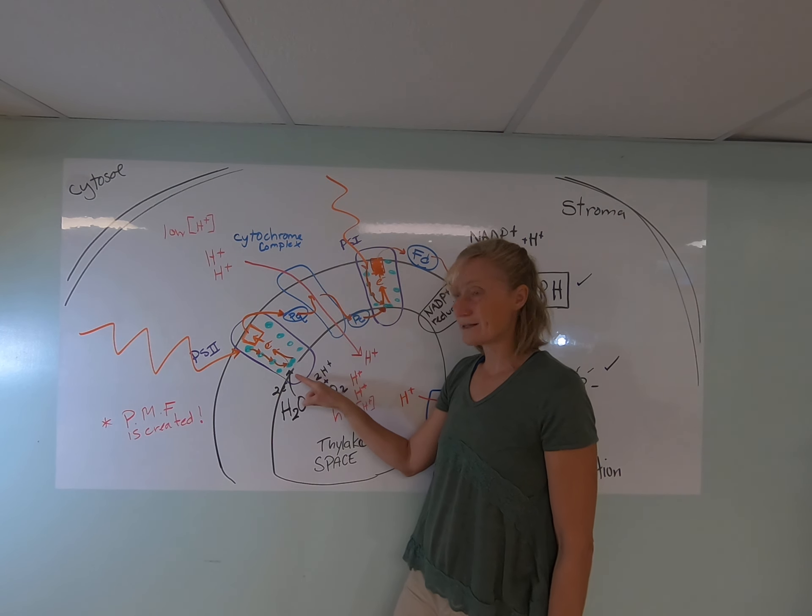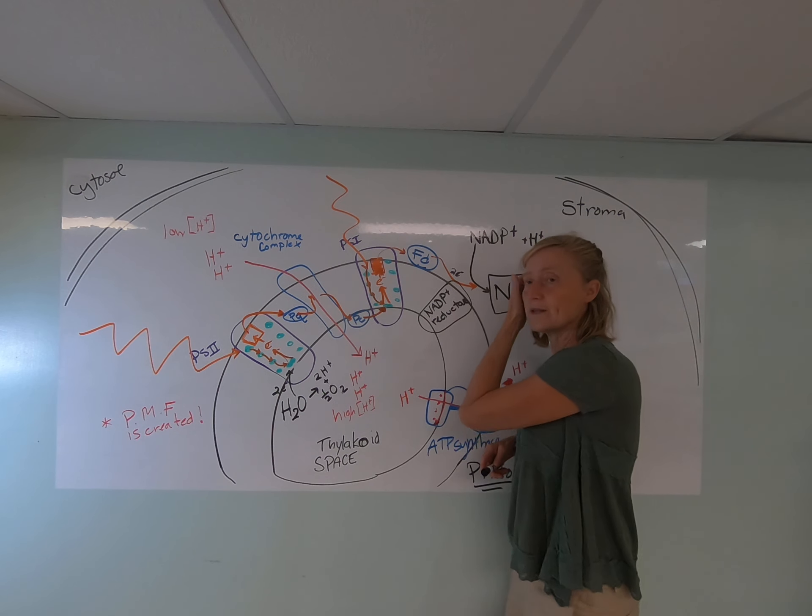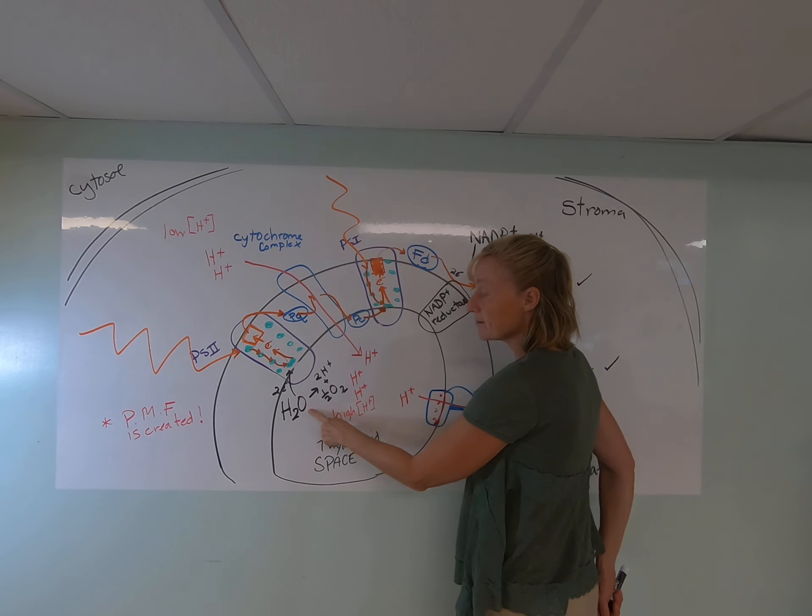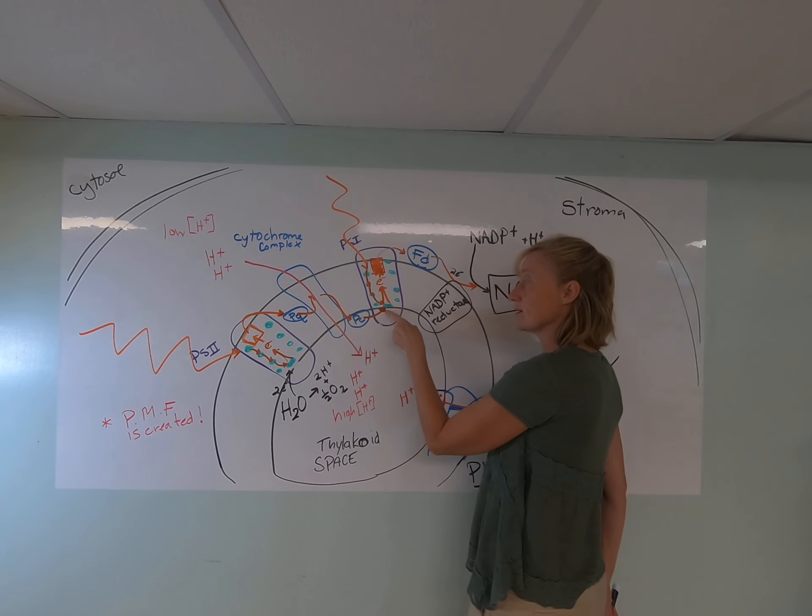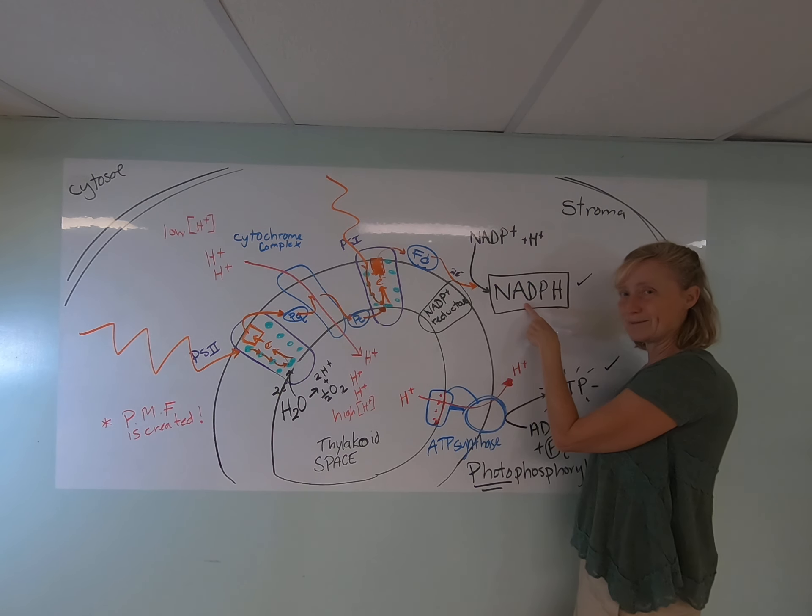This is the only enzyme in nature that can oxidize water. And water donates those electrons. So in linear electron flow, light energy is used to power the whole system. But electrons flow from water through photosystem II, through the electron transport to photosystem I, and finally flow to NADPH, a linear flow of electrons.